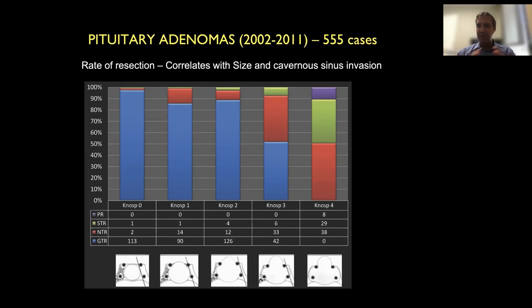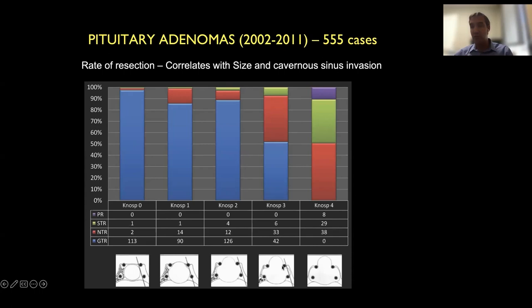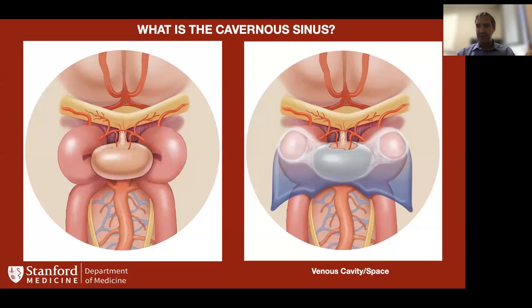There is a classification based on MRI called the Knosp classification. You draw a line along the carotid artery — Knosp grade 0 is when the tumor barely touches the cavernous sinus; grade 1, the tumor touches the wall; grade 2, it's pushing on the wall; grade 3, it's going into or compressing the cavernous sinus wall; and grade 4 is when it truly invades the cavernous sinus and surrounds the carotid artery. Knosp 3 and 4 are tumors we previously could not remove effectively — but this has been changing. This has been a focus of my research for the last decade: the anatomy and surgery of the cavernous sinus.